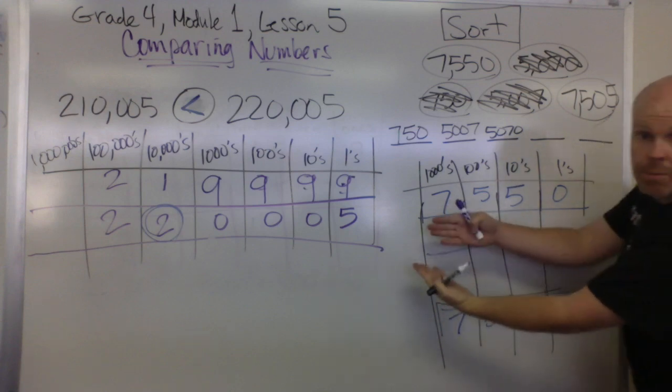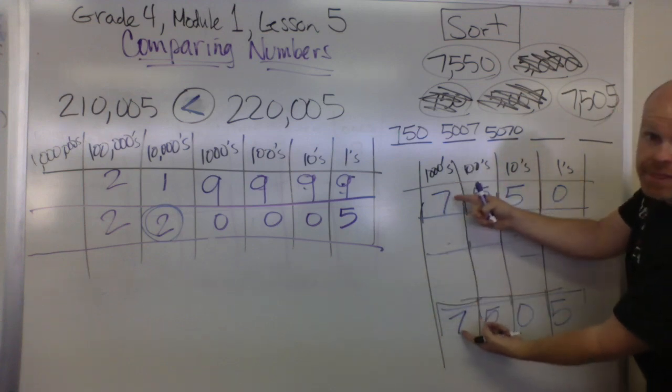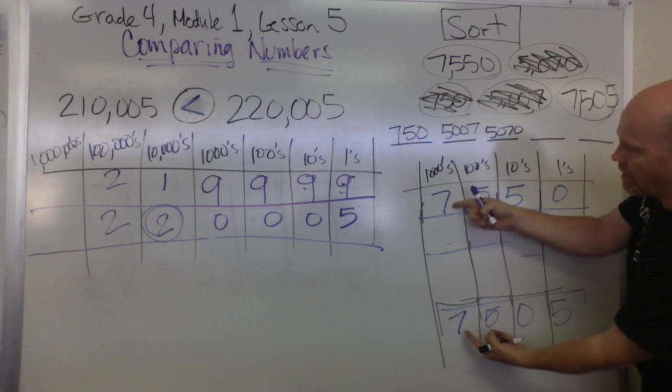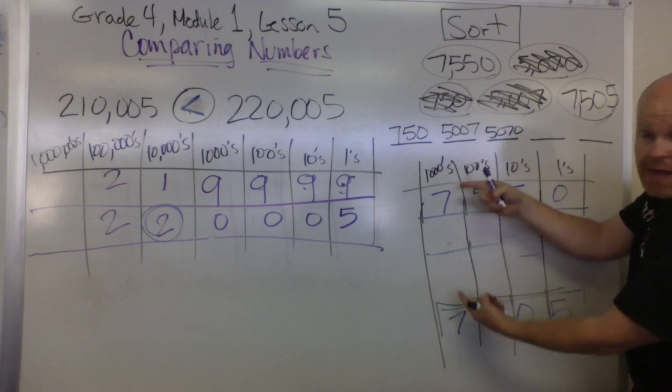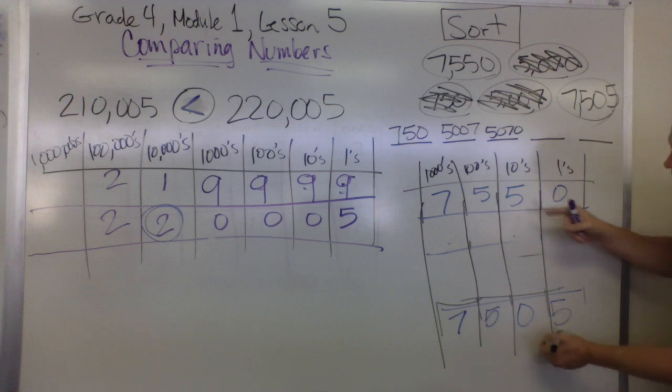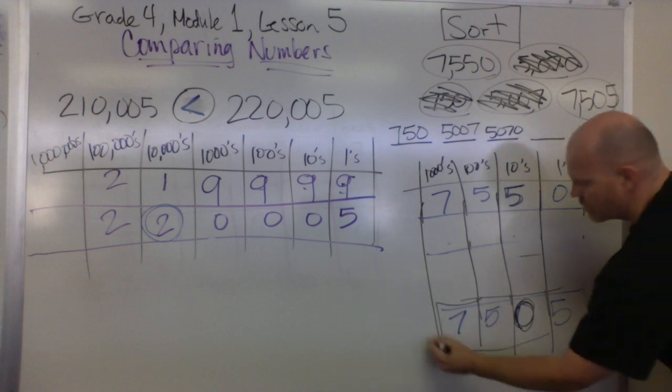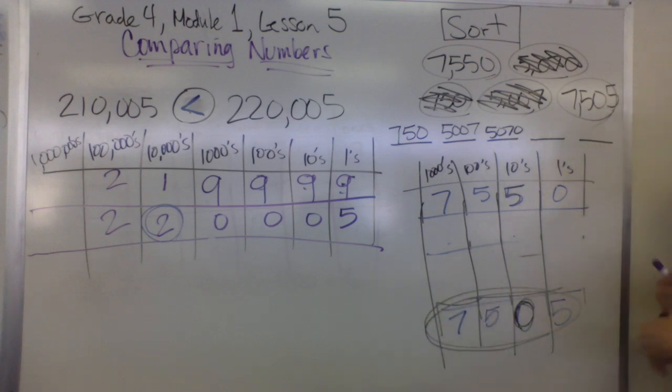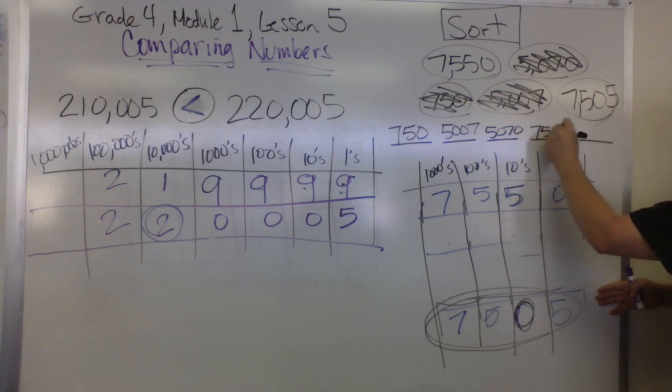We go back and we've got a tie at the thousands—two that both have seven copies of the thousands. Then we go next door and it's a tie again; they each have five copies of the hundreds. So we go next door and now we have our tie breaker. This zero loses to this five, so between the two, he's the least. That's going to be 7,505, seven thousand five hundred and five.